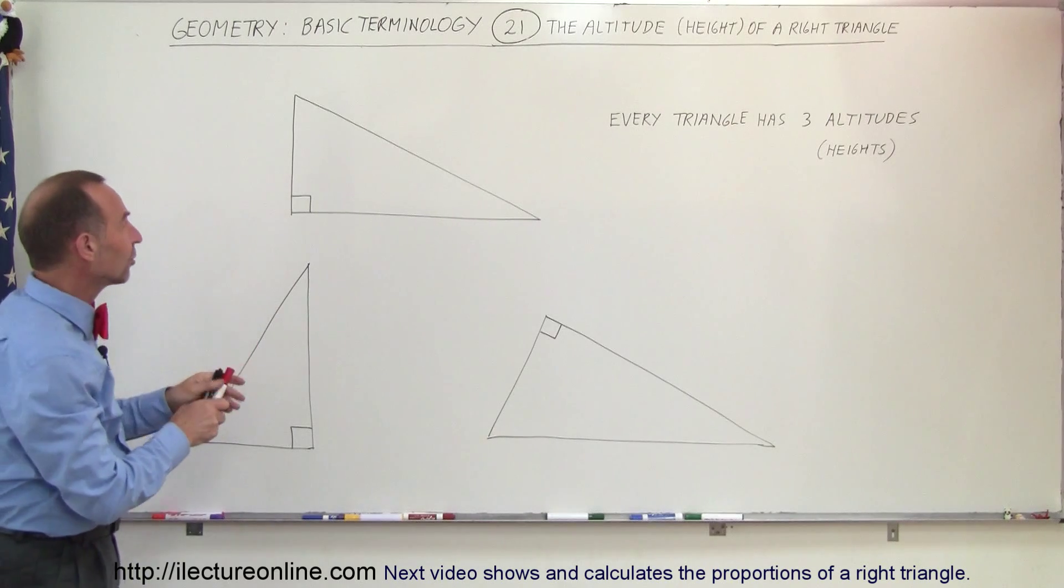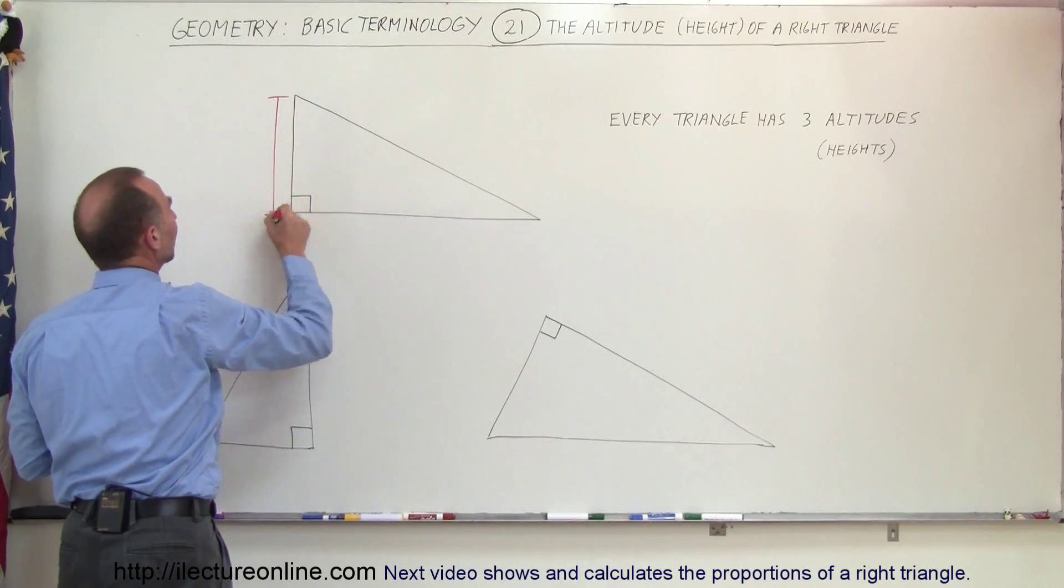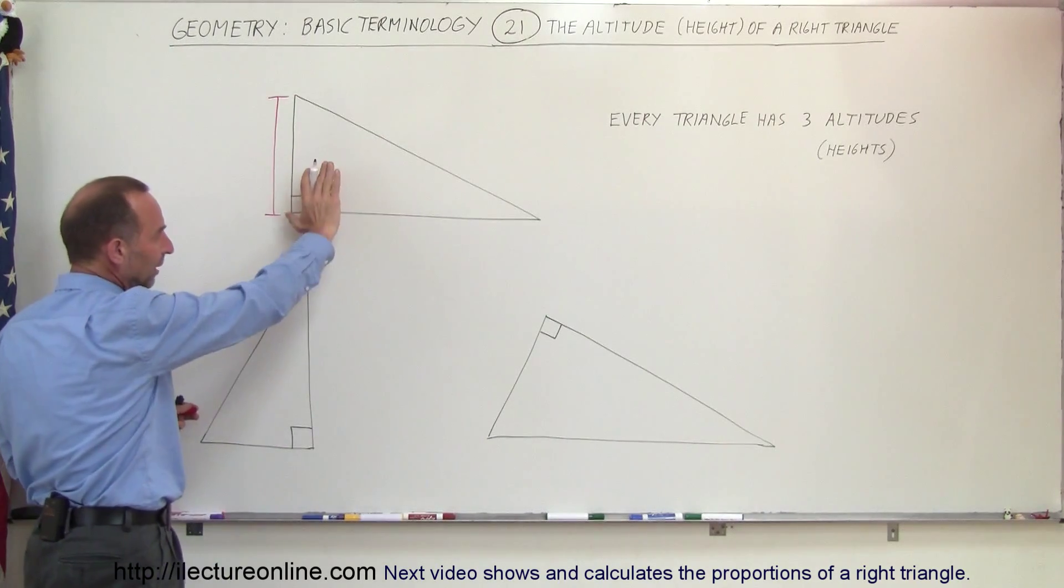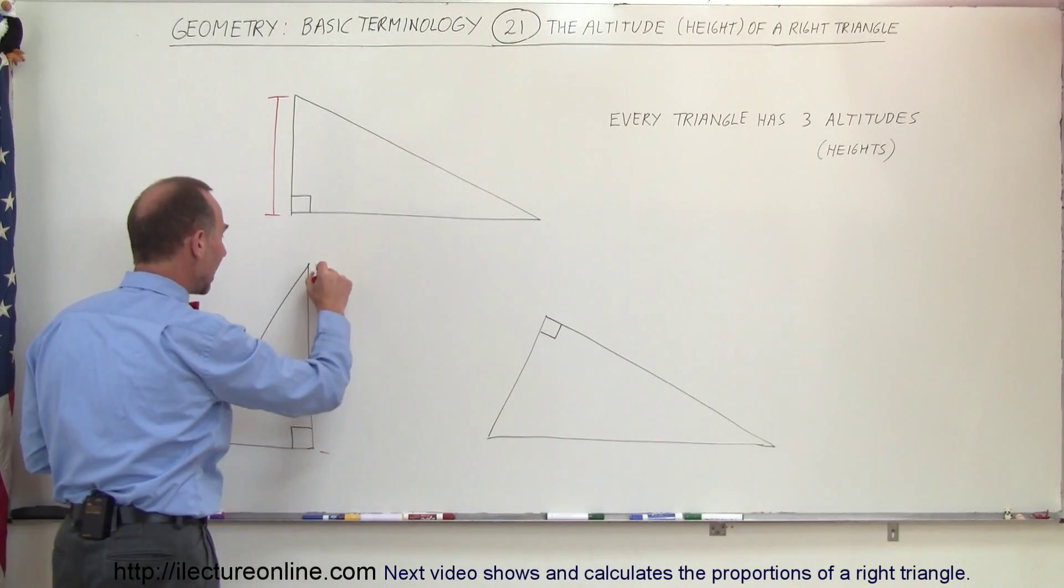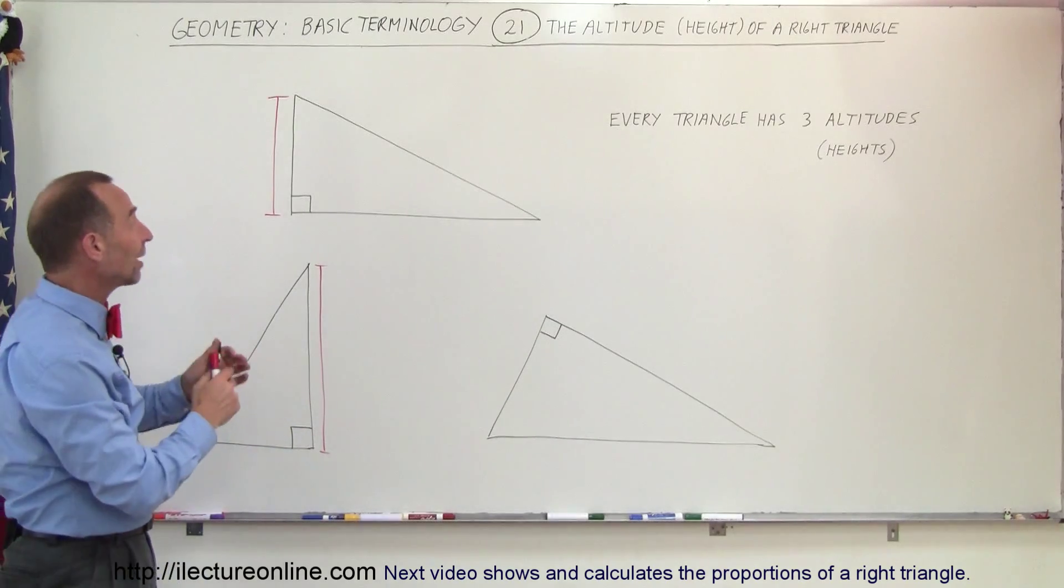So in this case, the height of the triangle can be considered the length of the side over there, so that would be the height or the altitude of the triangle. Or if we rotate this by 90 degrees, then we can talk about this as being the altitude of the triangle.